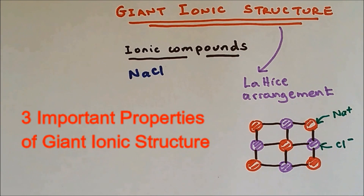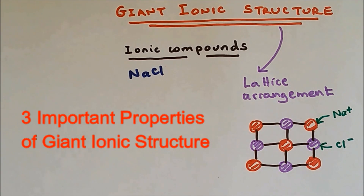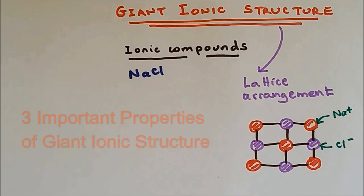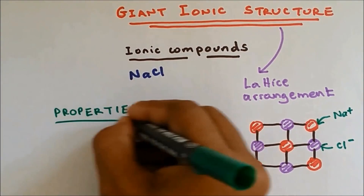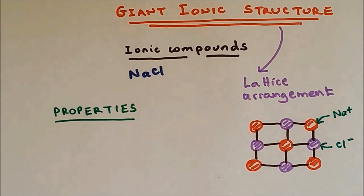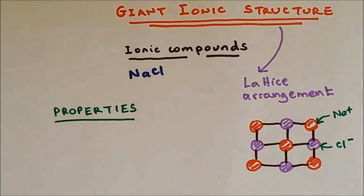Giant ionic structure has three important properties you need to learn, along with the reason for such properties. The first and main property of giant ionic structure is that they have a high melting and boiling point.